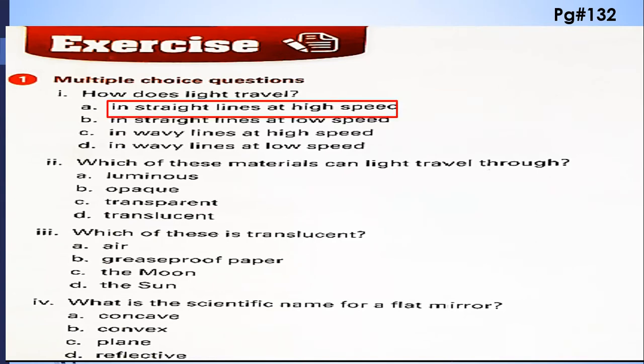The second statement is which of these materials can light travel through: luminous, opaque, transparent, and translucent. So the light is traveling through a transparent material.